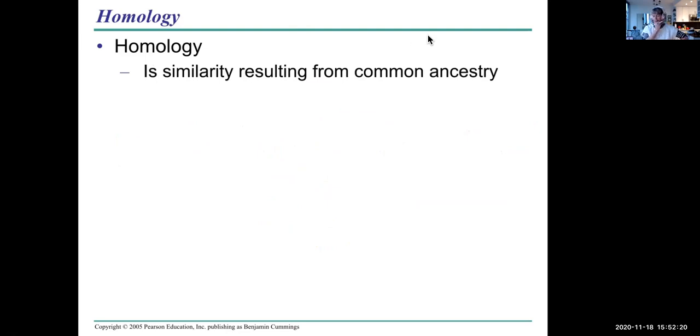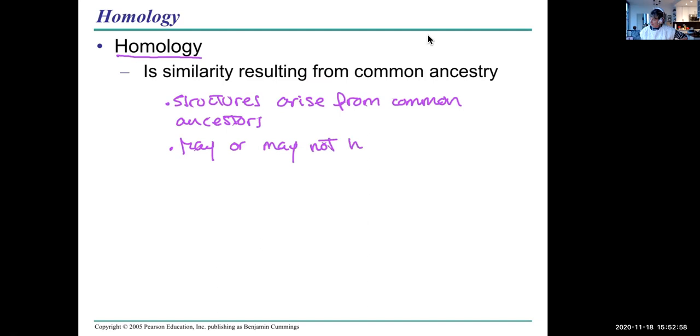One of those instances is something known as homology. Homology is a similarity in structures arising from common ancestry. So structures arise from common ancestors. And they may or may not have the same function. Quite often they do not have the same function.